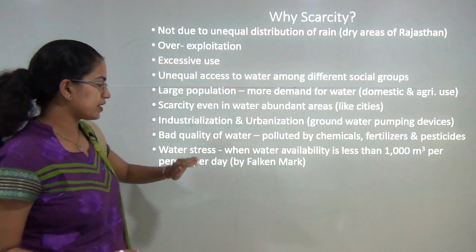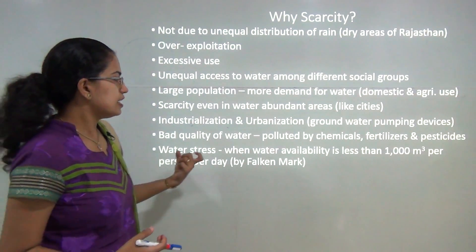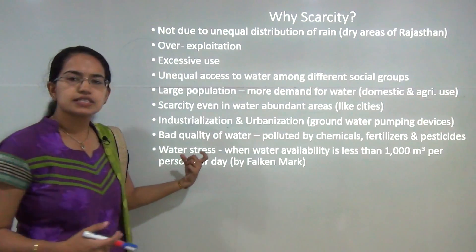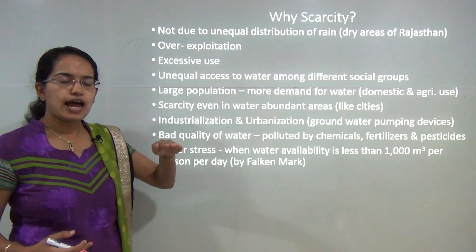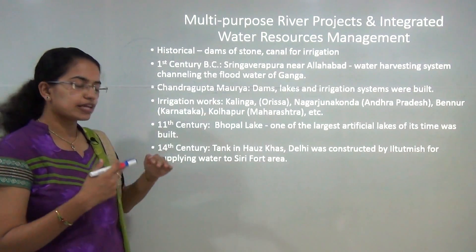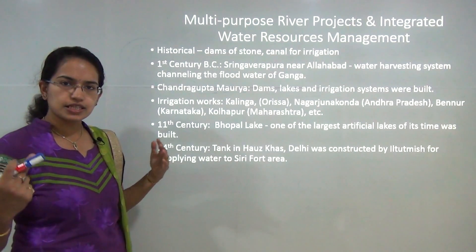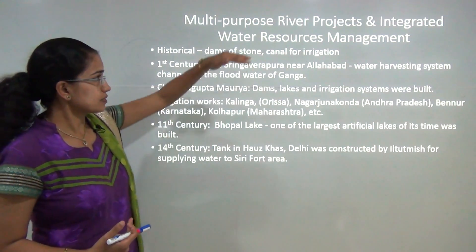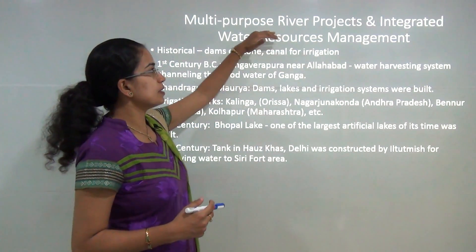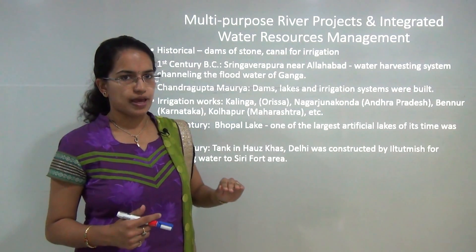Falkenmark was one of the pioneers who explained this in terms of water stress. He said if water availability is less than 1000 cubic meters per person per day, we call that water stress. If this water stress remains for a prolonged period, there would be phases of acute droughts and famine that could occur in a region. The next important thing that India has been leading is multi-purpose river valley projects and various integrated water resource management techniques.